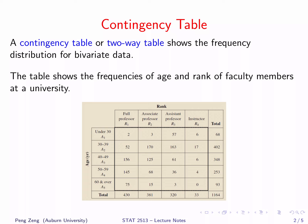For example, there are two faculty members who are under 30 and in the rank of full professor. There are three faculty members who are under 30 and in the rank of associate professor. Usually, the last row and the last column indicate the column sum and the row sum. For the first row, the total is 68. For the first column, the total is 430, which means that there are 430 faculty members in the rank of full professor.